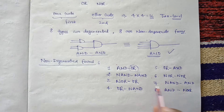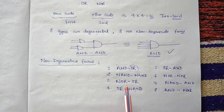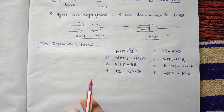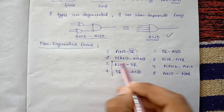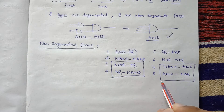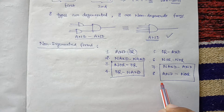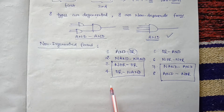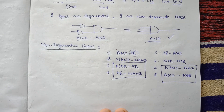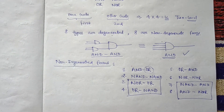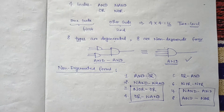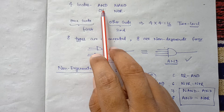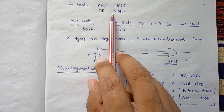These are the eight non-degenerated forms, and you can verify the other remaining eight types that we are calling degenerated forms yourself. Moreover, among these eight non-degenerated forms, two types have the same effect as two other types, which we will study in the next video.